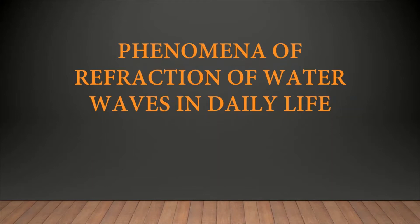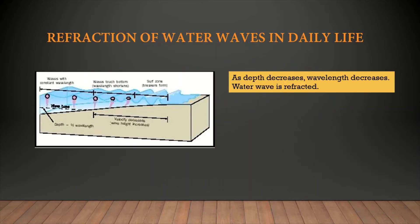Why do we learn refraction of water waves? Obviously, we want to explain certain phenomena in our daily life that we experience. Now look at this graphic here. It shows the cross section of the sea. As you can see, as the seabed gets shallow, or the water gets shallower, the wavelength gets shorter. We know that in the deep end of the sea, water waves travel faster than in a shallow region. So because of this change in speed, the wave bends, and we say the wave is refracted.